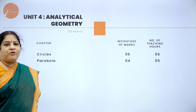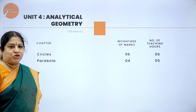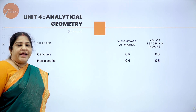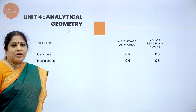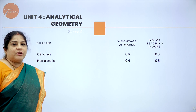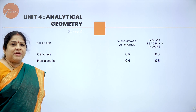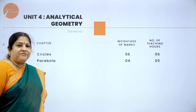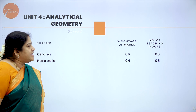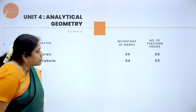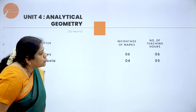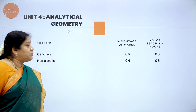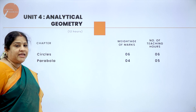Next, Unit 4 is analytical geometry. It consists of circles and parabola. Though the words are familiar to you, it is a very, very easy chapter and one can easily score total marks there. These are two lessons which are very easy.